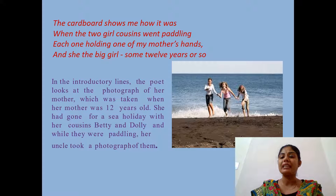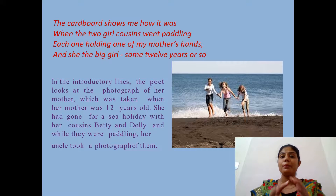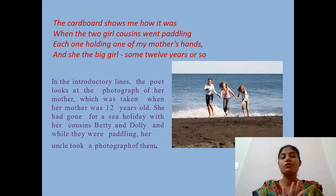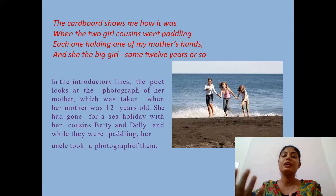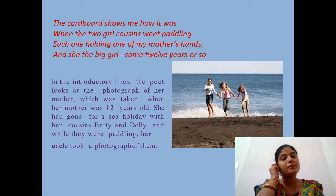Coming to the first few lines: 'The cardboard shows me how it was when the two girl cousins went paddling, each one holding one of my mother's hands, and see the big girl — some twelve years or so.' Here, the poet gives a clear picture of the photograph where she finds her mother and her two cousins captured in it. It was stuck to a cardboard in her home. Both cousins were holding her mother's hand, the mother was in the middle, and she was the eldest among them — around twelve years old.